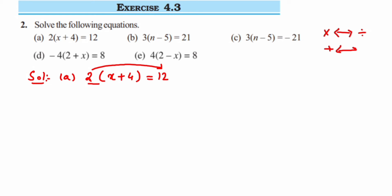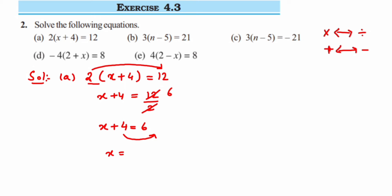So here it becomes x plus 4 is equal to 12 upon 2, because multiplication becomes division. 12 divided by 2 gives 6, so x plus 4 is equal to 6. Now transpose 4 to the other side — 4 is an addition, so it becomes minus. Therefore x is equal to 6 minus 4, which is 2. So x equals 2 is the answer for the first question.